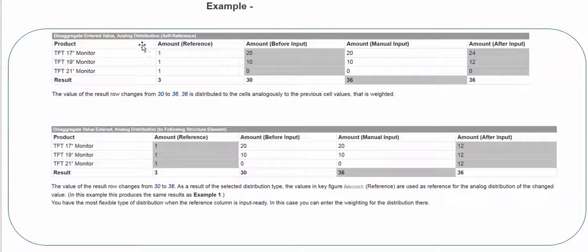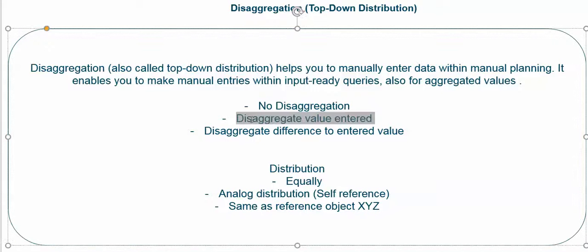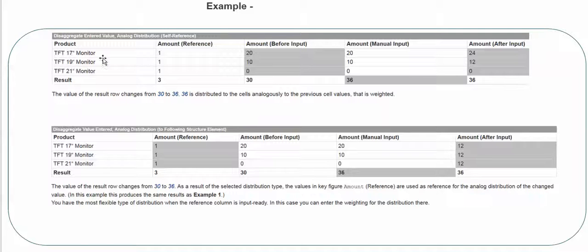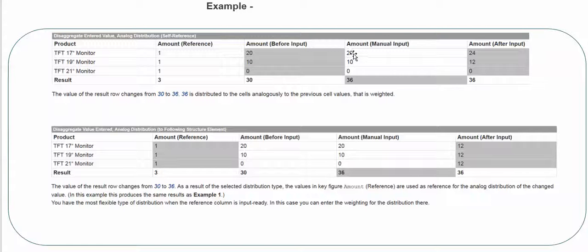Now moving to the next example: disaggregate entered value with analog distribution self-reference. We have the same three materials — Monitor 17, 19, and 21. The initial data is 20, 10, and 0, totaling 30. We are changing the total to 36. With analog distribution, it calculates the ratio from the existing data — 20 and 10 — which gives a ratio of 2:1.